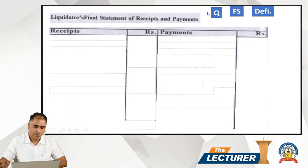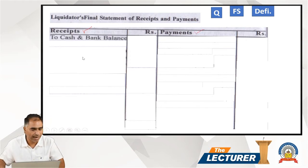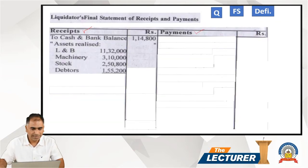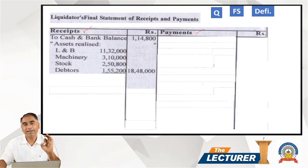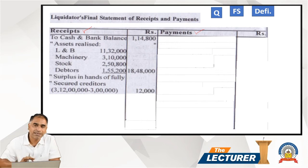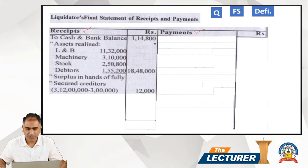The final statement has receipts on one side and payments on the other. On the receipts side, we write all collections: cash balance from the question is ₹1 lakh 14,000. Total assets realized come to ₹18 lakh 48,000. Then surplus from secured creditors: investment sold, creditor settled for ₹3 lakh, surplus of ₹12,000 is received. We now have the total available funds.